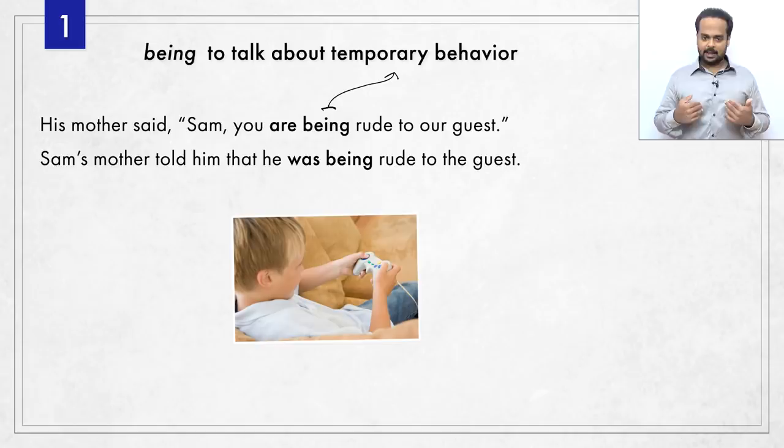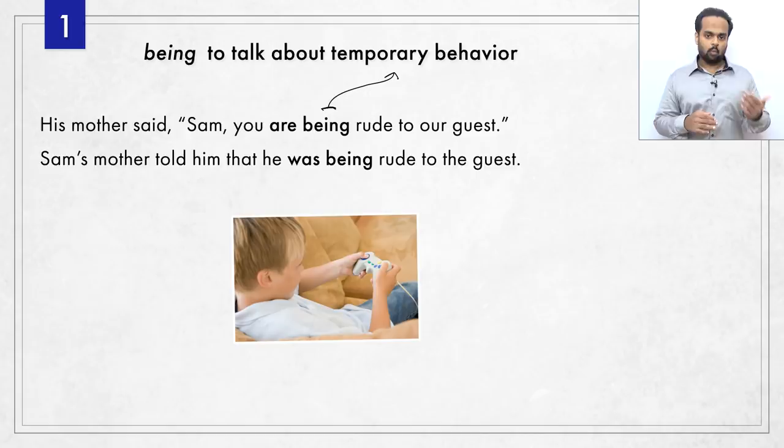When talking about the present, we say: I am, you/we/they are, he/she/it is. And for the past: I/he/she/it was, and you/we/they were.